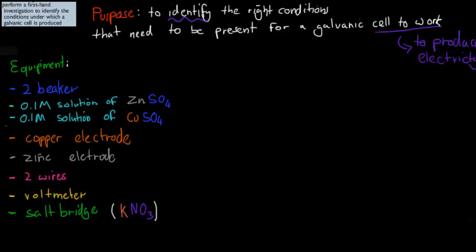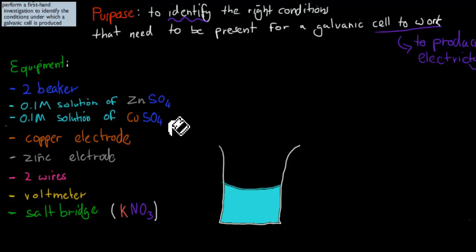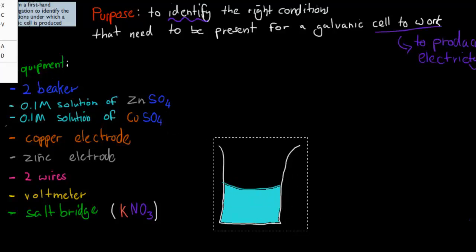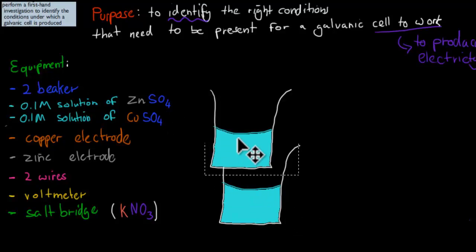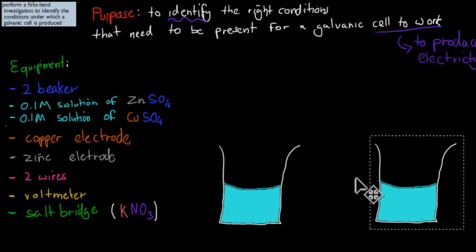So I'm quickly going to construct the actual galvanic cell. We have two beakers. One beaker here, and the beaker has our electrolyte solution. I'm going to quickly copy that. This is beaker number one and beaker number two. In these beakers we would have had our electrolyte solution. For beaker number one, we said zinc sulfate.